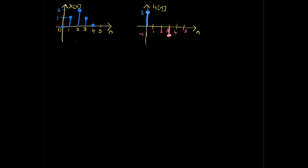The first thing you need to do in the shortcut method is converting the graph to numbers. Let's start with X[n], the input. This is a zero — put a zero right here. This is a one — put that right here. This is a two — put that right here. This is another one, and this is a zero — put it right here.